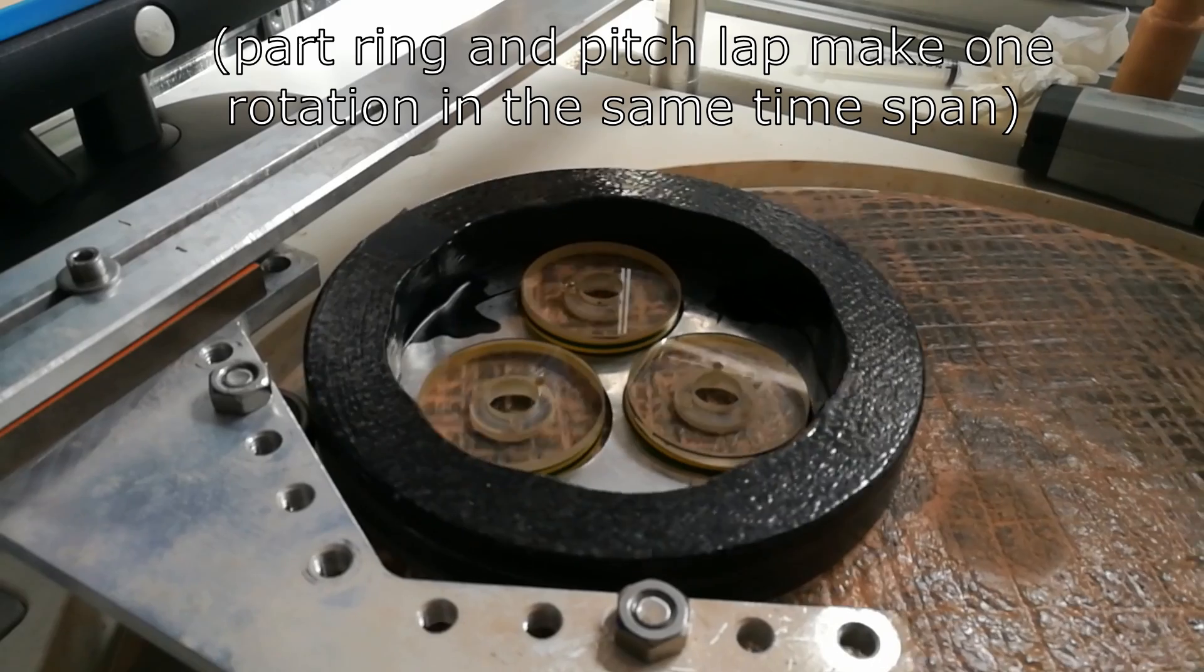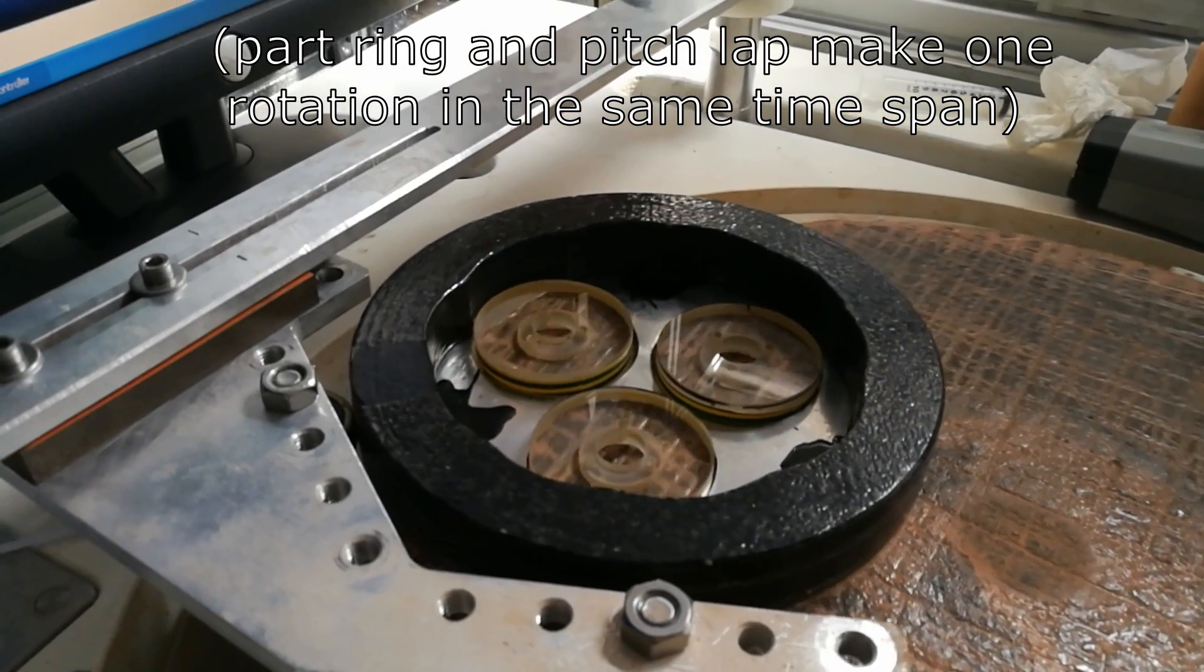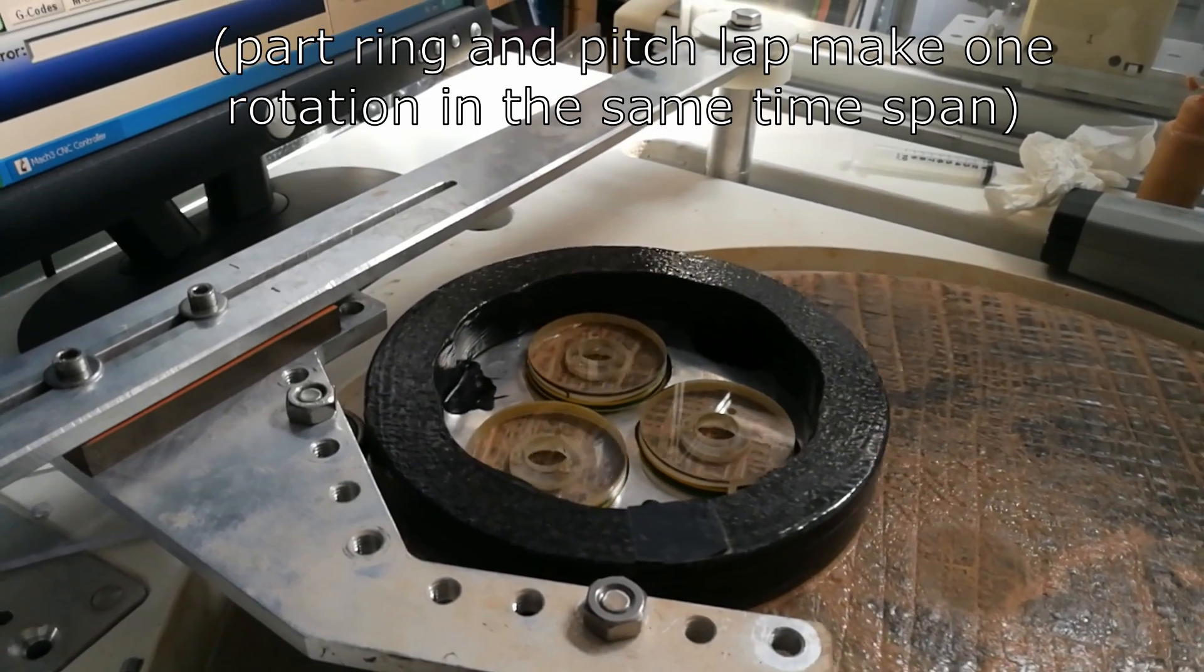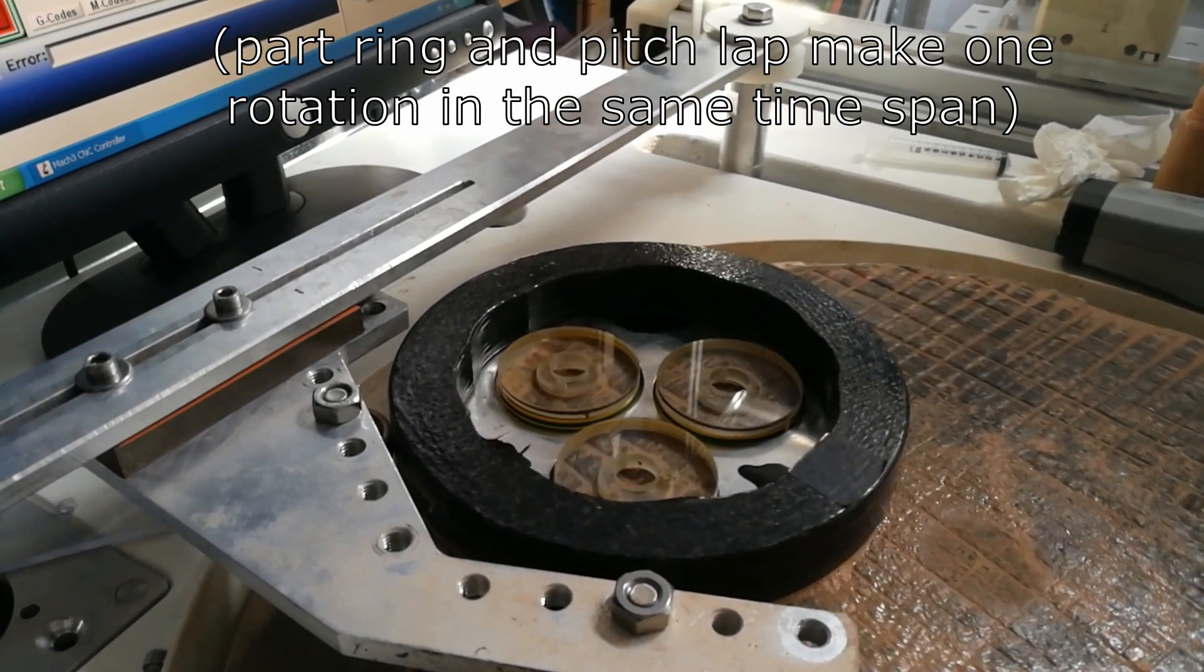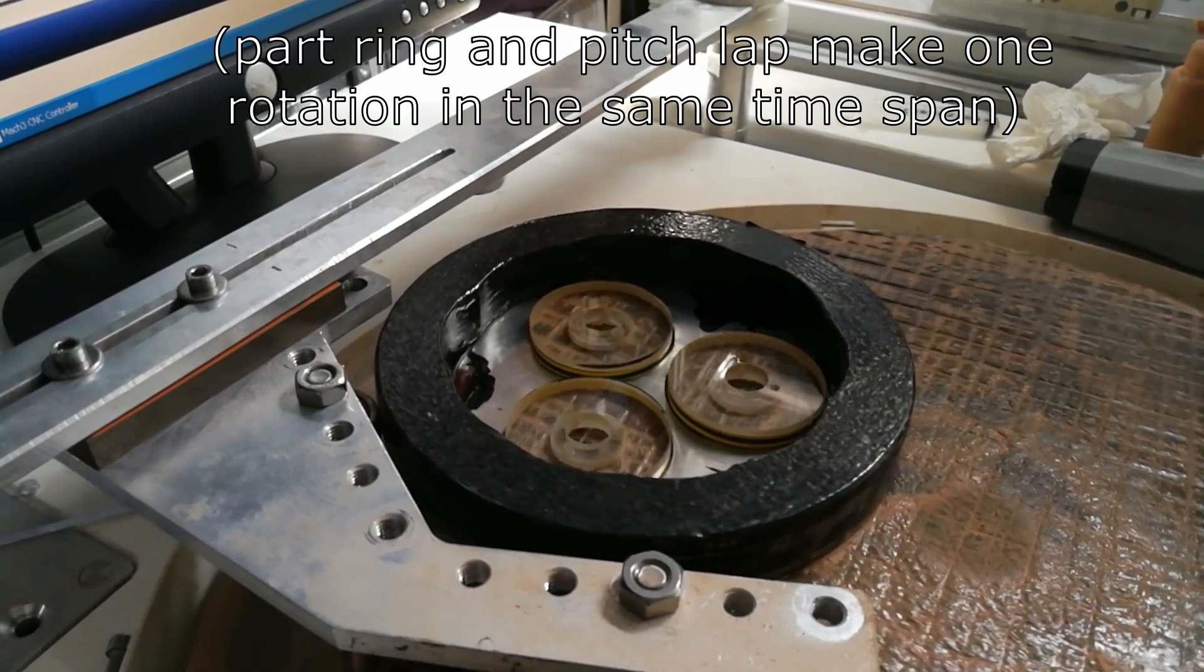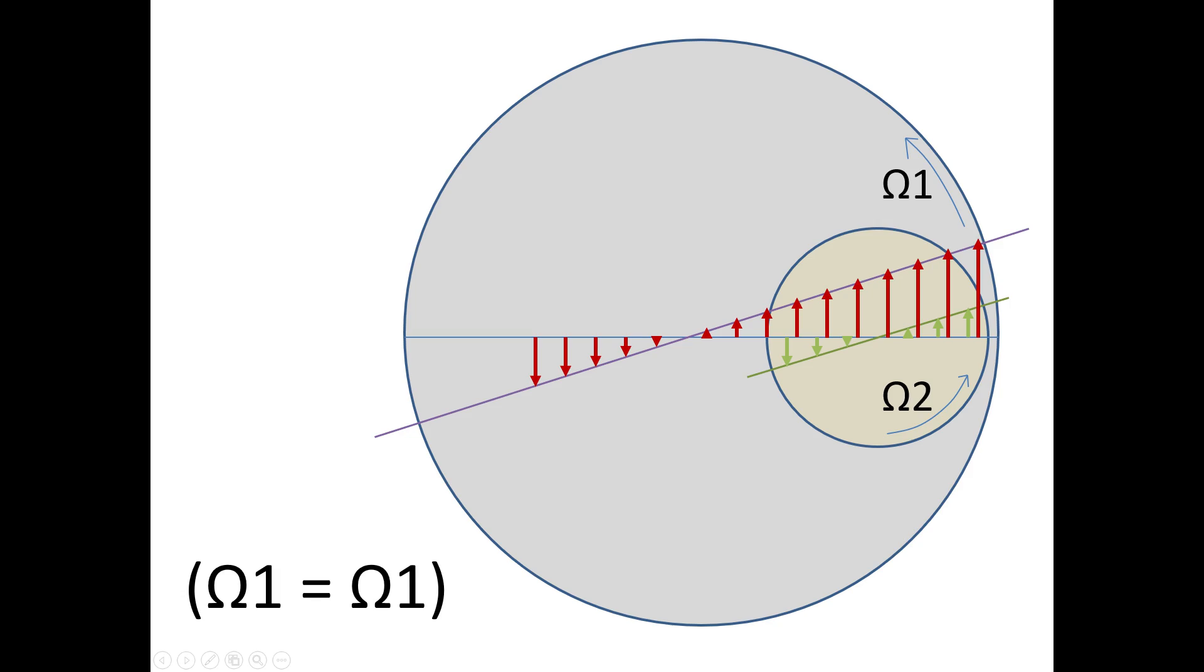When a continuous pitch polisher is operating correctly, the objects placed on it should have an angular rotation speed identical to that of the pitch lap itself. So only then you will have a constant uniform abrasion. To quickly illustrate, you see that with the identical angular rotation of the object and the pitch lap, the difference in translation speed between the pitch lap and the object is identical over the complete surface of the object.